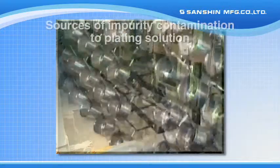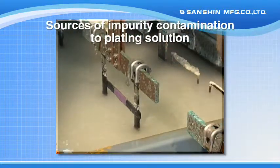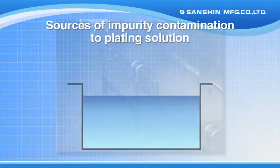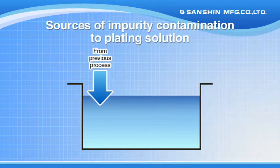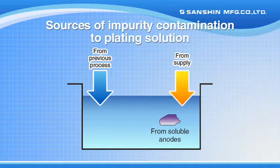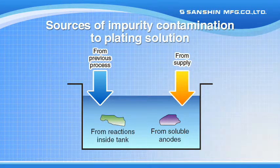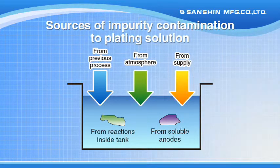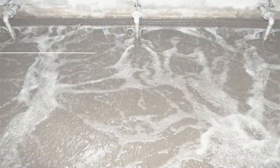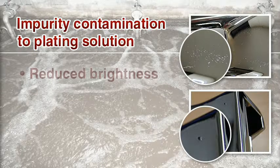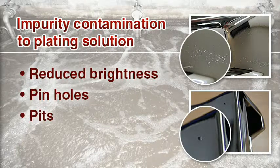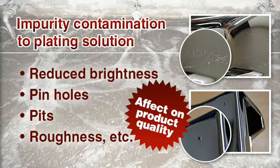Why are filters necessary for the plating process? The plating solution used in the plating process tends to be contaminated with various impurities. Typical sources of such contamination are impurities adhering to plated products from the previous process being carried into the plating process, impurities in the anode solution, impurities in the chemical and water supplies, reaction products in the plating tank, and dust in the atmosphere. These impurities tend to have an adverse effect on plating quality, such as reducing brightness and causing pinholes, pits, and roughness, and therefore it is necessary to filter out impurities.